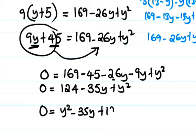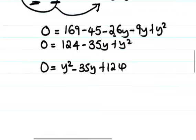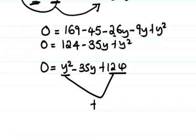Next step, we arrange it: 0 equals y squared minus 35y plus 124. We'll solve it by completing the square or factorization. Let's do it by factorization.